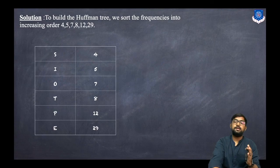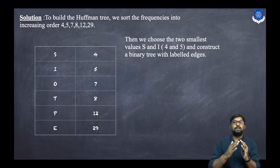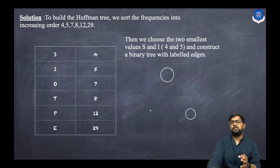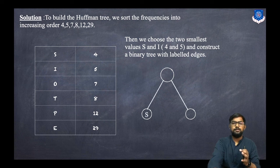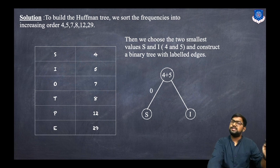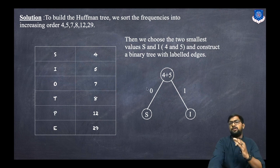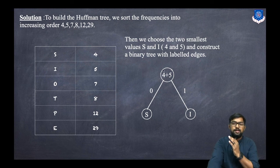We choose the two smallest values — s with frequency 4 and i with frequency 5 — and construct a binary tree with labeled edges. We combine them: 4 plus 5 equals 9, creating a new internal node labeled 'si' with weight 9. The left edge is labeled 0 and the right edge is labeled 1.